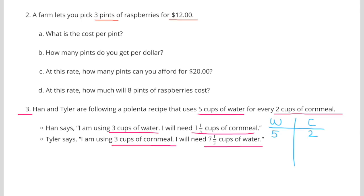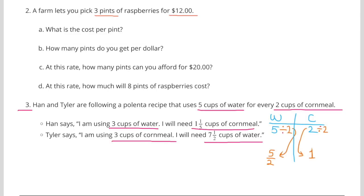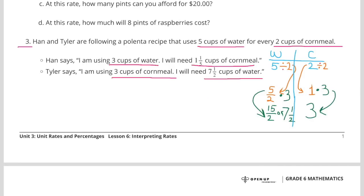Now let's see how Tyler did. 5 cups of water for every 2 cups of cornmeal. 2 cups of cornmeal divided by 2 to get 1 cup of cornmeal, and 5 divided by 2 to get 5 half cups of water. Tyler says he's using 3 cups of cornmeal. So let's multiply his 1 cup of cornmeal times 3 to get 3. Since we multiplied that side by 3, we'll have to multiply the 5 halves by 3, and that's going to give us 15 halves, or 7 and a half cups of water. Which is exactly what Tyler said he needed.